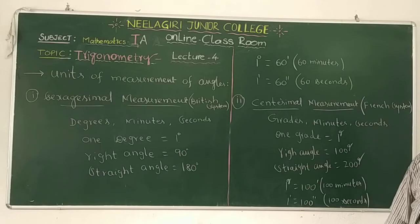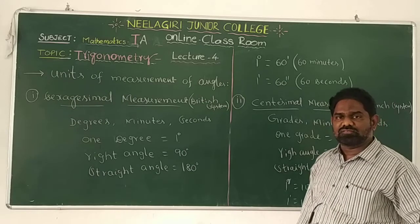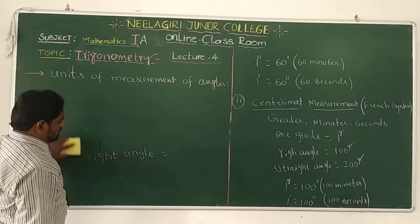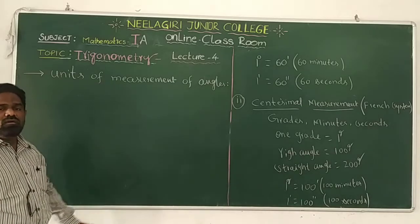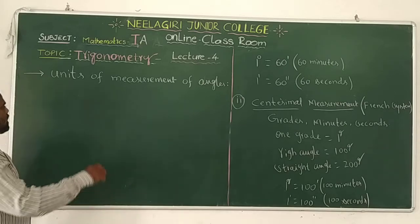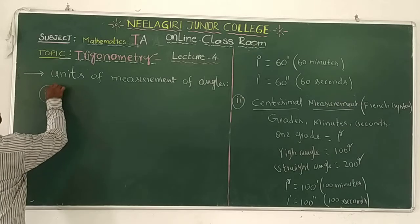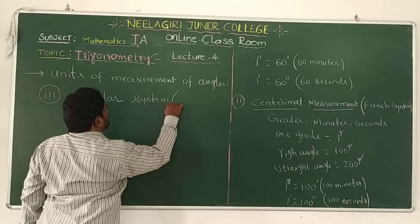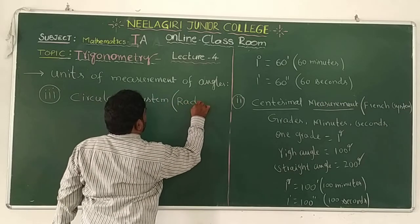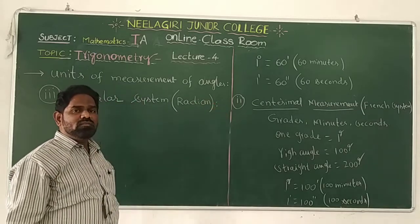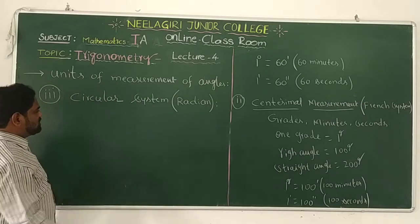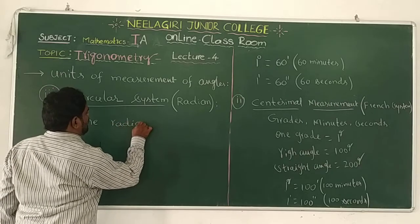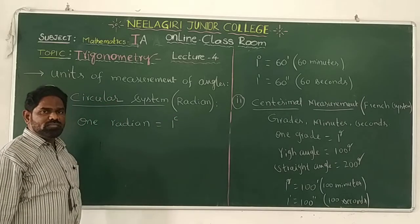One more important system to measure the angle is the circular system. The third one is the circular system, also called the radian system. In this system, we measure the angle in radians. This is the universal system. One radian is denoted by a small superscript 'c'.